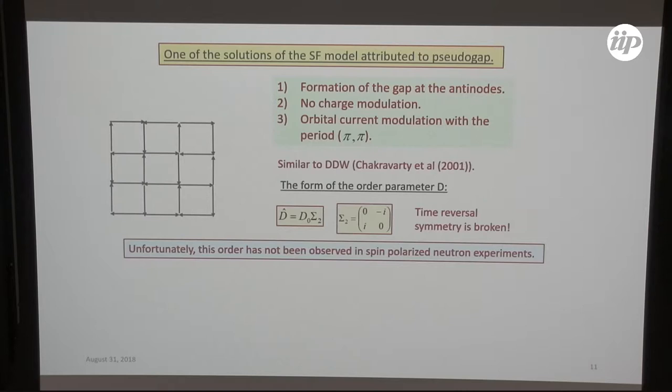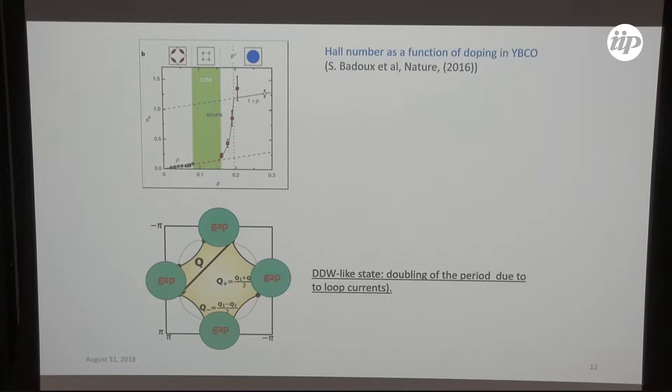The problem to use this solution for cuprates was that it has not been seen by many spin-polarized neutron experiments. It has not been seen by any other tools. Although if they existed they had to be seen. But at the same time this state is not so bad for cuprates because one has here gaps at the anti-nodes, doubling the period. It would be good to have something like that, but it contradicts the absence of any signal in neutron spin-polarized neutron scattering.